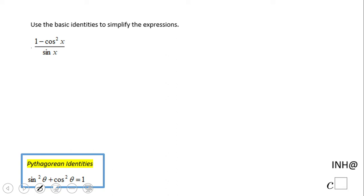Welcome back to C-Squared. In this example, we'll simplify a trigonometric expression: 1 minus cosine squared of x over sine of x.